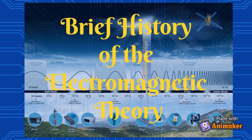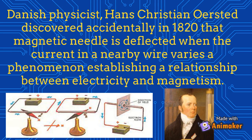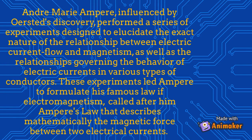The original players in electromagnetism are Ørsted, Ampere, Faraday, Henry, and Maxwell, along with many others who laid the groundwork for understanding electromagnetic theory. A Danish physicist, Hans Christian Ørsted, discovered accidentally in 1820 that a magnetic needle is deflected when the current in a nearby wire varies — a phenomenon establishing a relationship between electricity and magnetism.